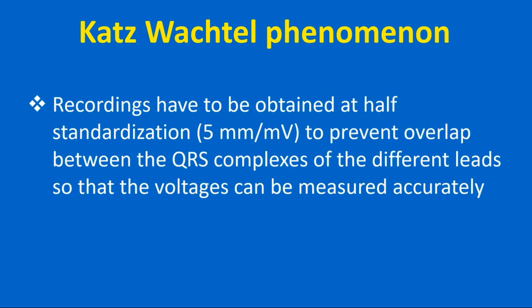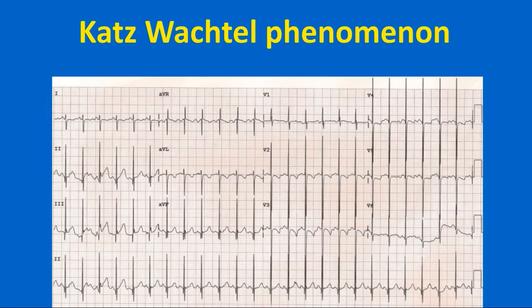Recordings have to be obtained at half standardization, that is 5 mm per mV, to prevent overlap between the QRS complexes of the different leads so that voltages can be measured accurately. Tall biphasic QRS complexes are seen in leads V2 to V5 in this ECG, suggestive of Katz-Wachtel phenomenon. Overlap of QRS complexes between leads above and below are visible, indicating the need for a recording in half standardization. QRS complexes are predominantly negative in leads I and aVL, indicating right axis deviation of QRS.